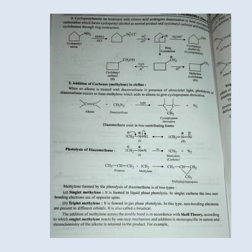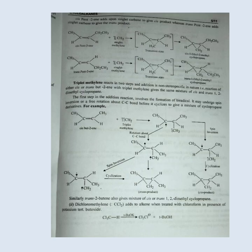Triplet methylene is also called a biradical. The addition of methylene across the double bond is in accordance with Skell theory, according to which singlet methylene reacts by a one-step mechanism, and the addition is stereospecific in nature — the stereochemistry of the alkene is retained in the product. For example, cis-pent-2-ene adds to singlet carbene to give the cis-product, whereas trans-pent-2-ene adds to singlet carbene to give the trans-product.